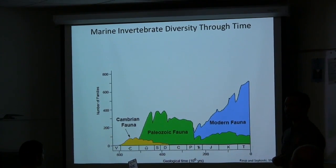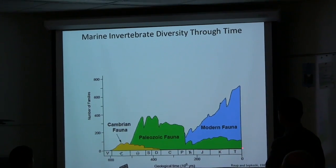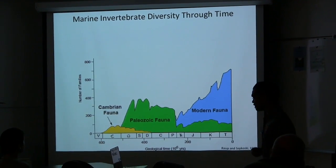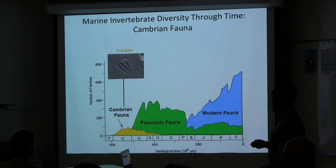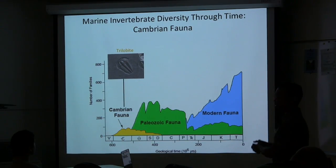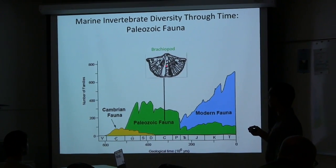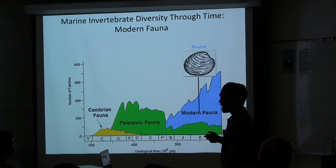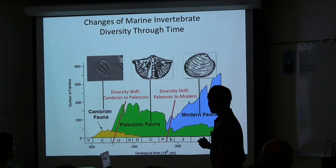This is Raup and Sepkoski's curve showing marine invertebrate diversity through time. On the x-axis is time, with the most recent time on the far right. On the y-axis is number of families. There are three groups of fauna. The first is the Cambrian fauna in yellow, in which trilobites were common. Then there was the Paleozoic fauna in green, in which brachiopods were common. And finally in blue, the modern fauna in which bivalves were common. Fauna diversity has varied through time.